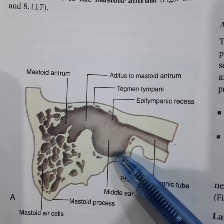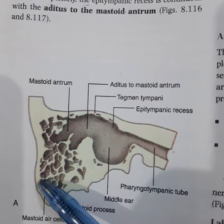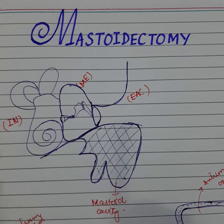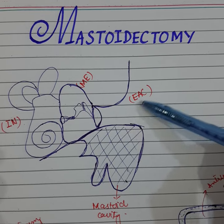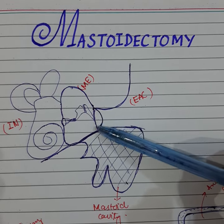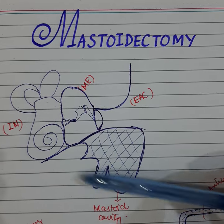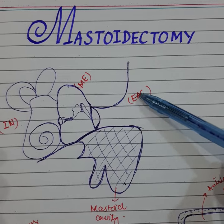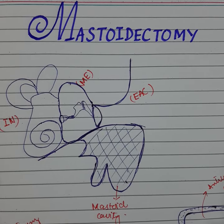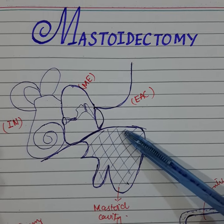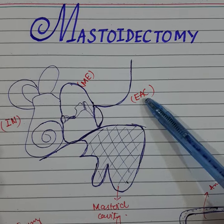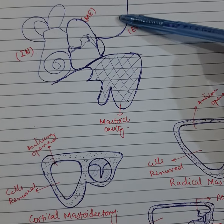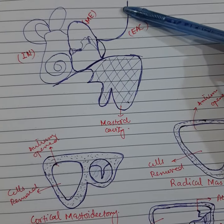Here in this diagram you can see the middle ear cavity which is posteriorly continuous with the mastoid cavity and through the aditus to the mastoid antrum. In the schematic diagram, you can see the external auditory canal continuous with the tympanic membrane, the middle ear, and the internal ear. The mastoid cavity is separated from the middle ear and external auditory canal by a bony wall or bony septum.